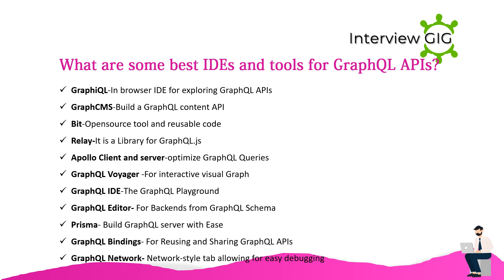What are some of the best IDEs and tools for GraphQL APIs? GraphiQL: a browser IDE for exploring GraphQL APIs. GraphCMS: build a GraphQL content API. Bit: open source tool for reusable code. Relay: a library for GraphQL.js. Apollo Client and Server: optimize GraphQL queries. GraphQL Voyager: for interactive visual graphs. GraphQL Playground. GraphQL Editor: for backends from GraphQL schema. Prisma: build GraphQL servers with ease. GraphQL Bindings: for reusing and sharing GraphQL APIs. GraphQL Network: network-style tab for easy debugging.